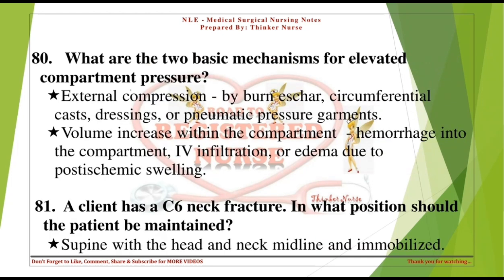What are the two basic mechanisms for elevated compartment pressure? External compression — by burn eschar, circumferential casts, dressings, or pneumatic pressure garments. Volume increase within the compartment — hemorrhage into the compartment, IV infiltration, or edema due to post-ischemic swelling.